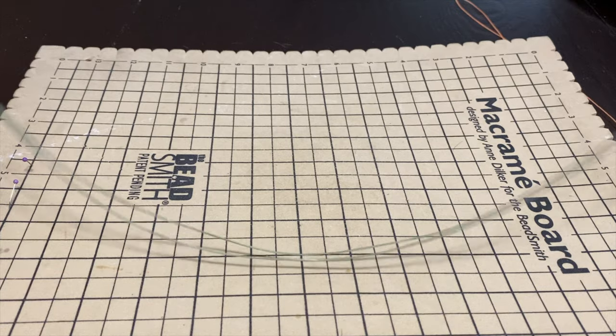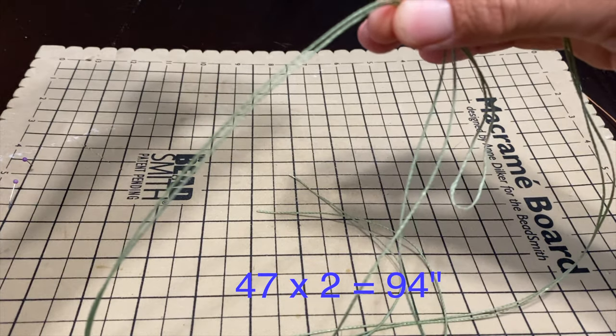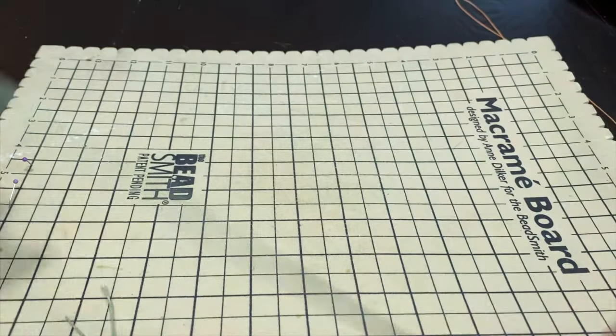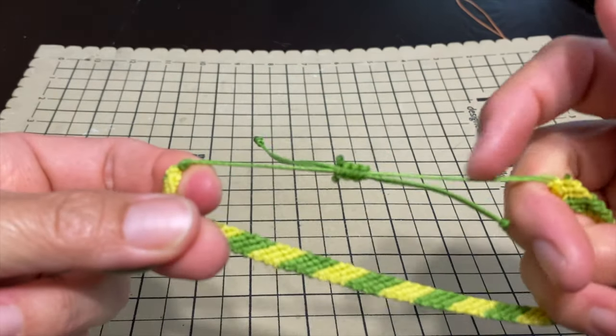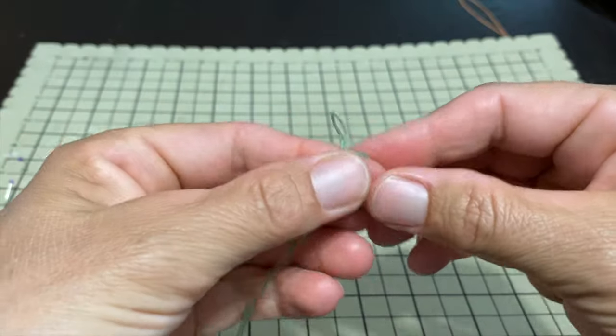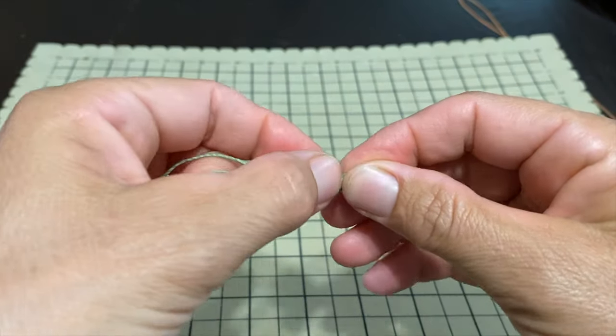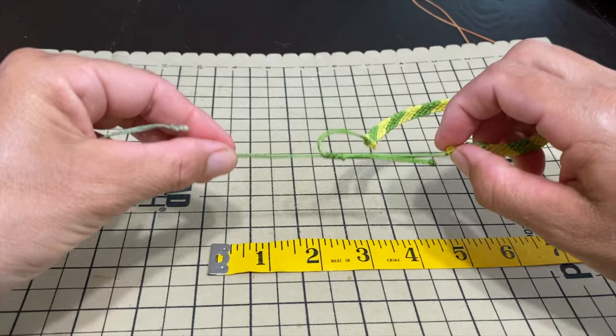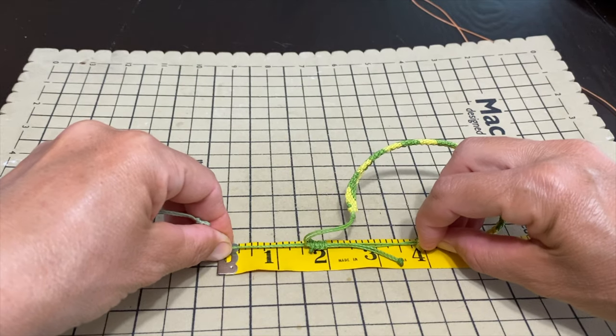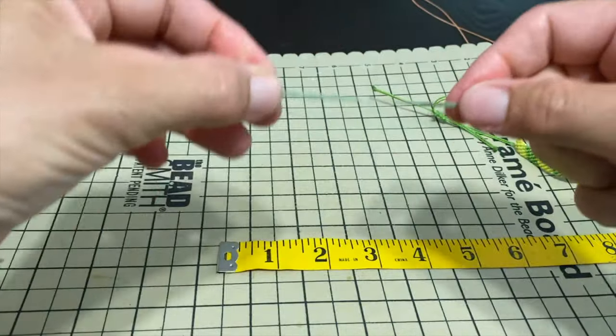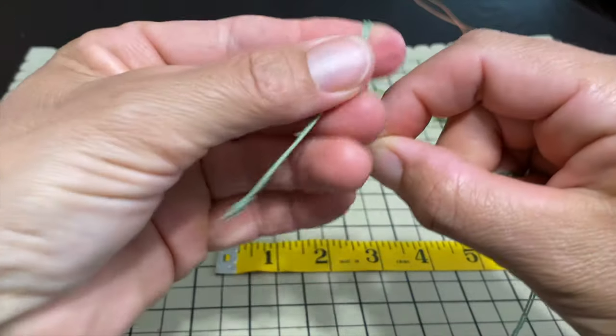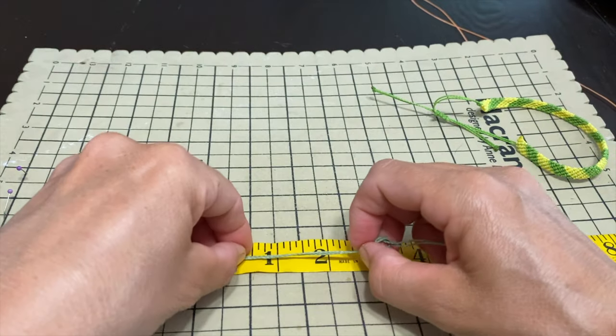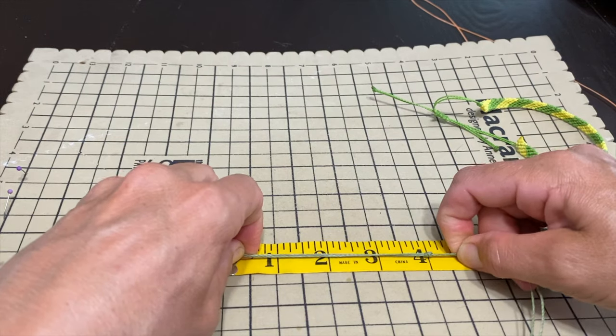We're going to start by taking the long long string, the one string that is 47 inches and it's doubled, so it is 94 inches total. This will serve as this section here. We're going to start by making a little knot at the end, just a simple knot like this. We will make the second knot at 4 inches, about. There we go.